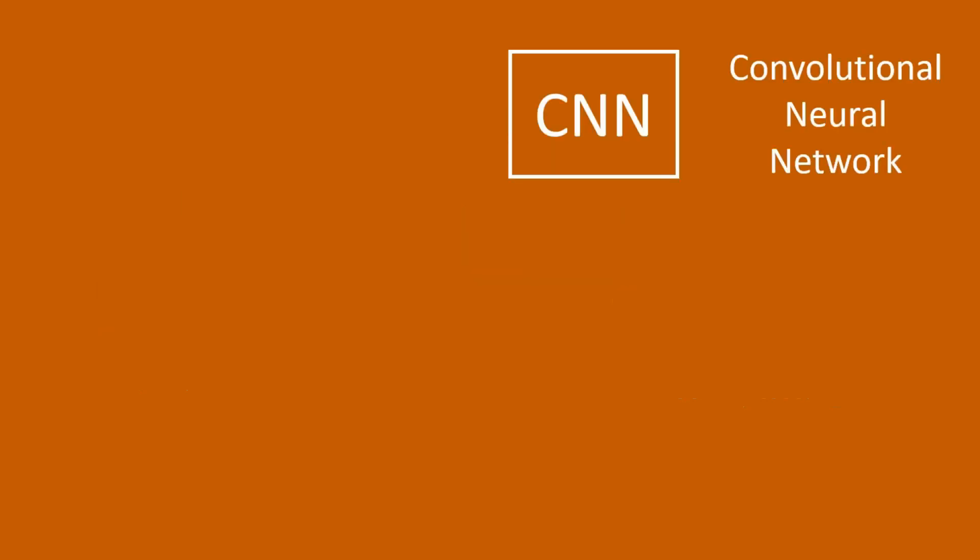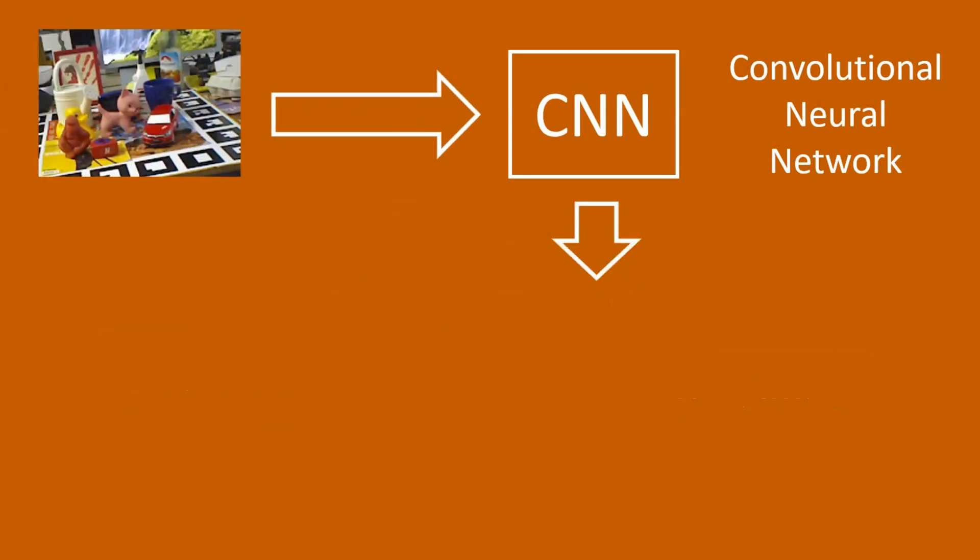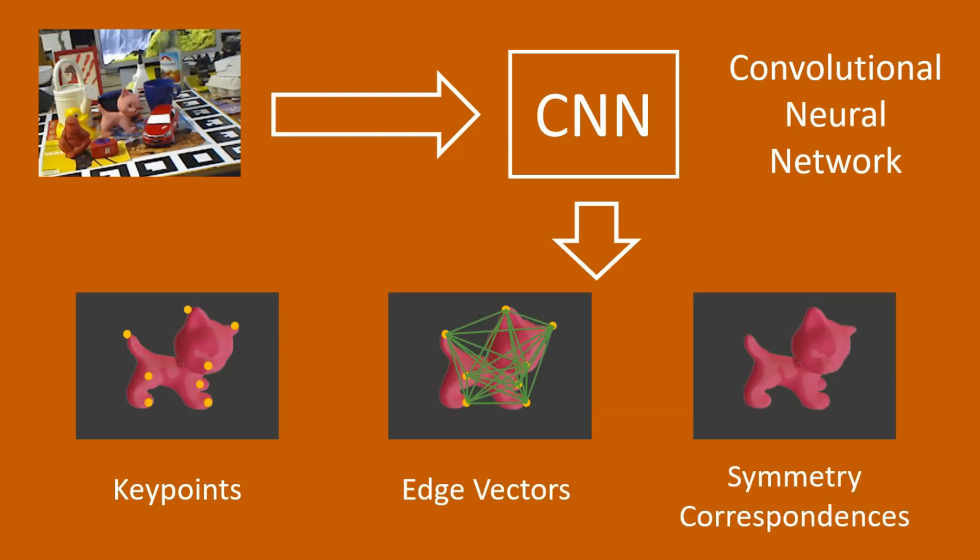Hybrid Pose utilizes a convolutional neural network which takes the RGB image as input and predicts three different types of intermediate representations: keypoints, edge vectors, and symmetry correspondences.